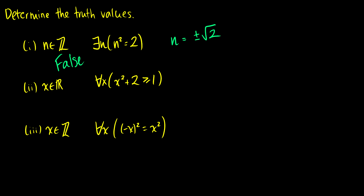Second one: for x in the real numbers, for all x, x squared plus 2 is going to be greater or equal to 1. Well, we know that x squared is going to be greater or equal to 0 no matter what real number we put in. So we have that 0 plus 2 is greater or equal to 1, and this is true for any x we put in. So this statement is true.